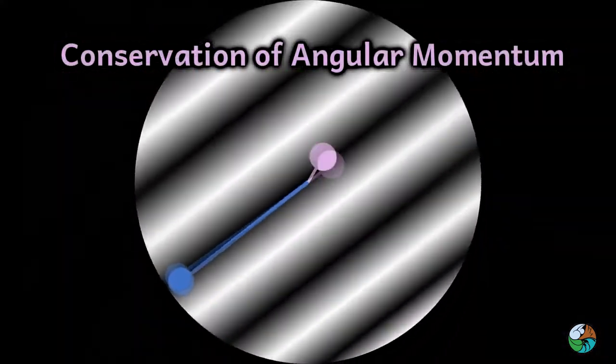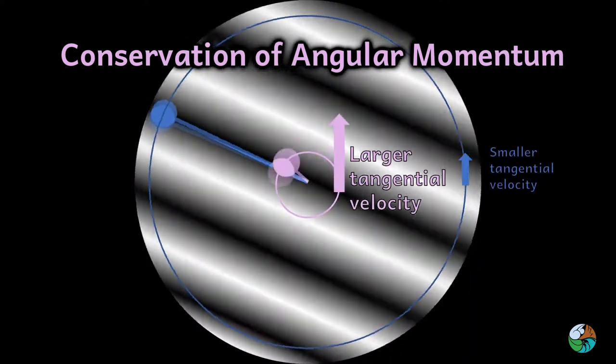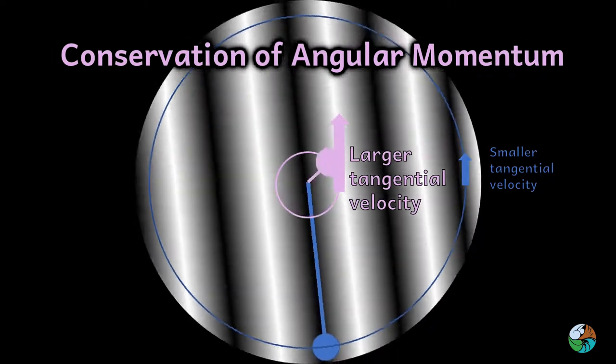Conservation of angular momentum makes the tangential velocity much larger at the center of the vortex than far away from the vortex.